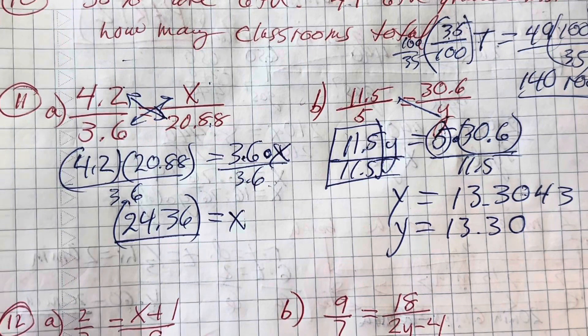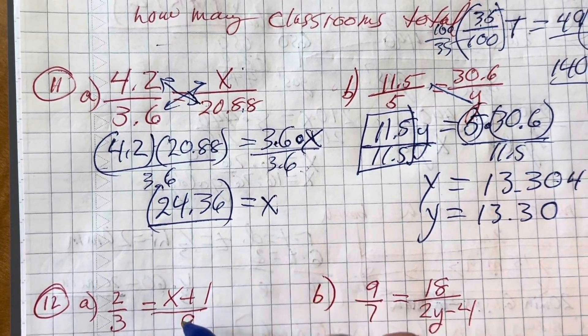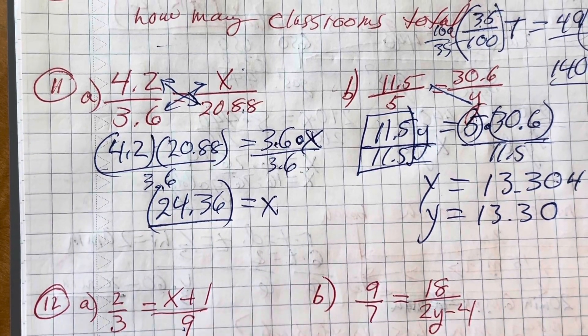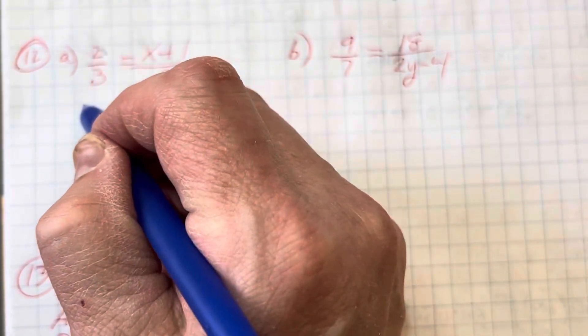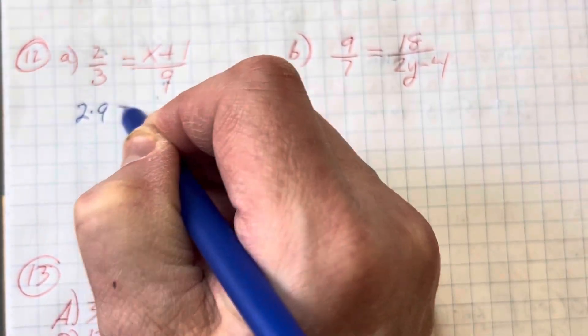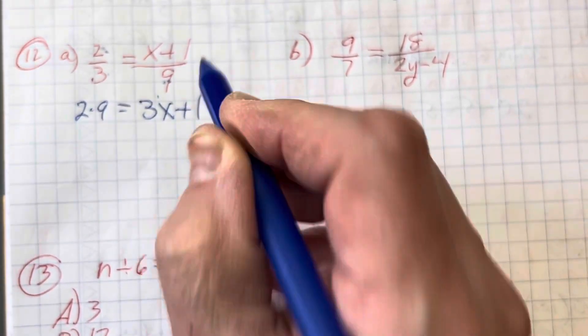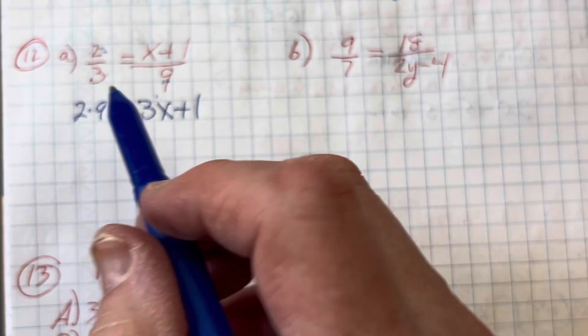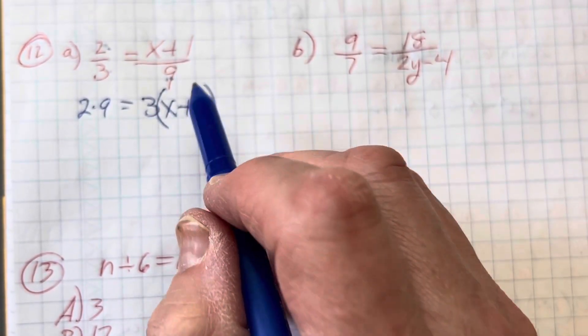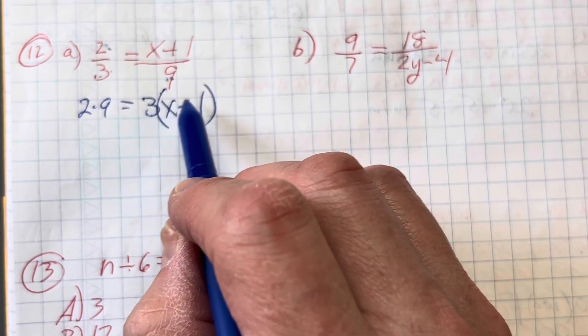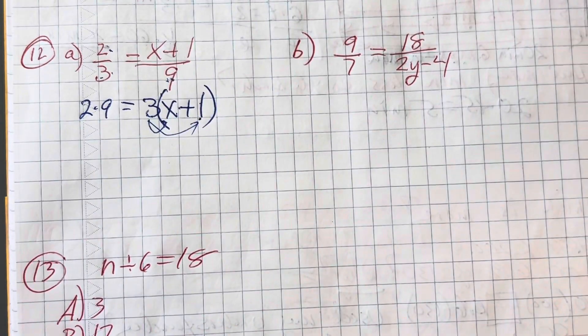Now here's something a little different. This one actually has a variable plus a number. How does that work? Let's see what happens. Well I know I can multiply cross products. I have 2 times 9 equals 3 times this. So is it 3x plus 1 or is it 3 times the whole quantity x plus 1? It's this. Trust me. So we have to take the 3 and multiply everything within there. That one and that one. We have to multiply by the 3.